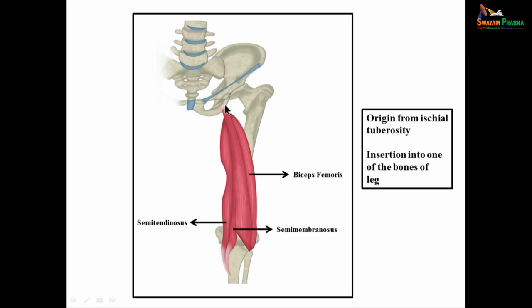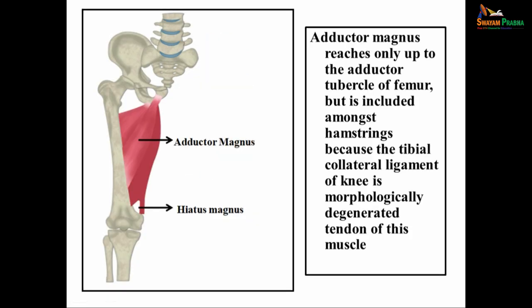The biceps femoris has two heads: the long head and the short head. Only the long head is included in the hamstring group; the short head is not, as it arises from the femur. Similarly, only the ischial part of the adductor magnus is included in the hamstring group. The adductor magnus inserts into the adductor tubercle of the femur, but the tibial collateral ligament, which is the morphologically degenerated tendon of this muscle, crosses the knee joint and inserts into the tibia.